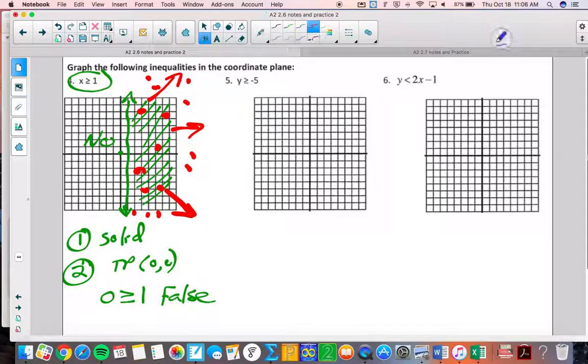Number 5. If you wanted to write this in slope-intercept form, you could. The slope is 0. So, there's like 0x. That's why there are no x's over there. So, your y-intercept is negative 5. That's down there. And then, it's greater than or equal to. So, it's going to be a solid line. This is a horizontal line, and it's a horizontal solid line right there.